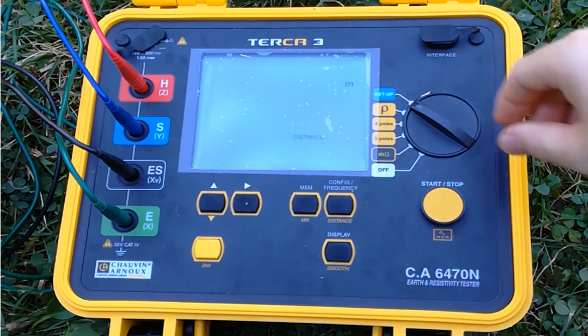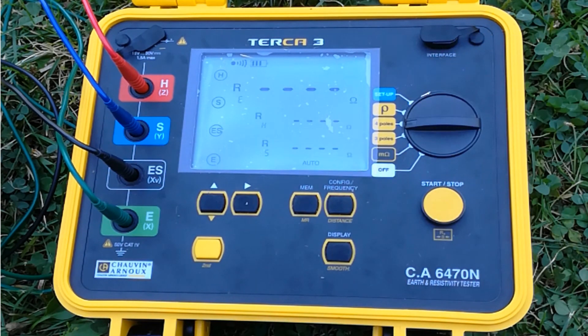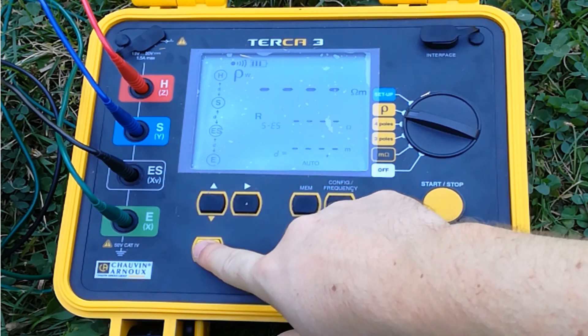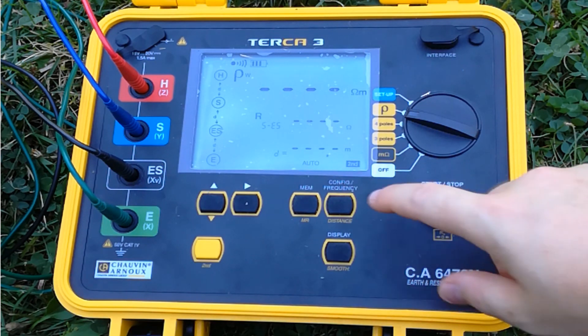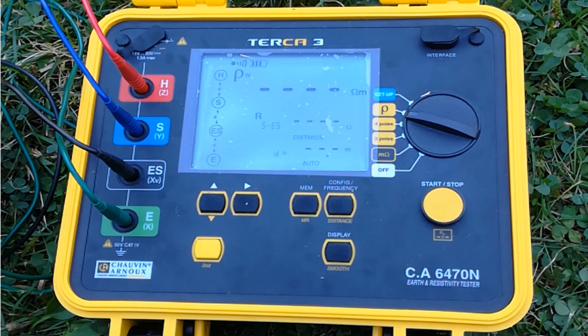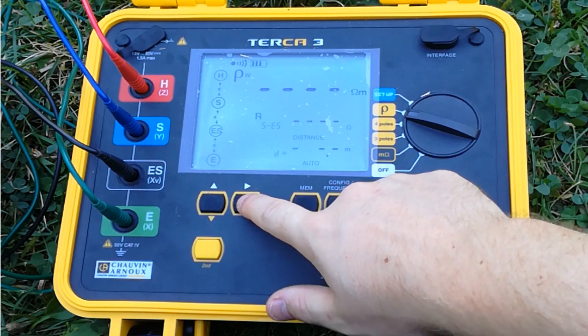Next, turn the dial to the resistivity settings, and to enter the spacing distance A, press the yellow button. The symbol second appears on the screen. Now, press distance button. Use the up and right buttons to indicate the distance A.